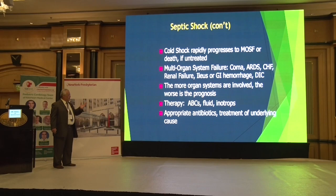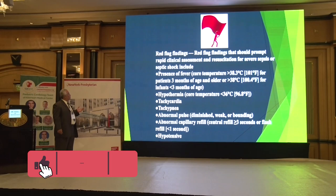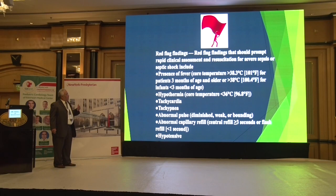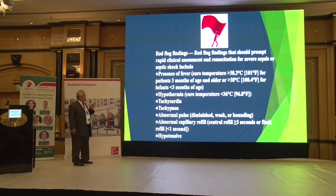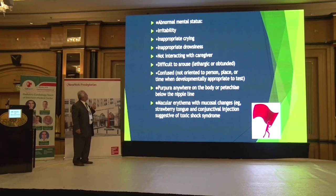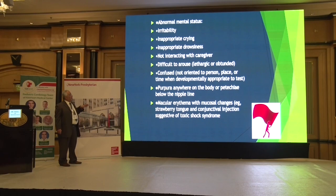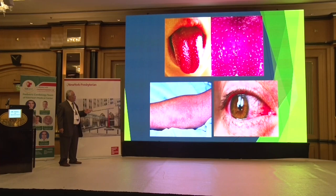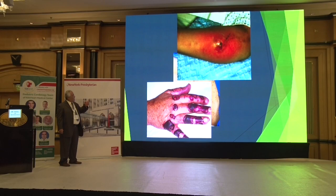Therapy: start with ABCs, give fluids, give inotropes, appropriate antibiotics, and treat the underlying cause. Red flags: fever more than 38.3°C in patients three months and older, or more than 38°C in infants less than three months, hypothermia, tachypnea, abnormal pulse, abnormal capillary refill (more than 3 or less than 1 second), hypotension, fluctuating mental status, irritability, inappropriate crying, inappropriate drowsiness, not interacting with caregivers, confusion, purpura anywhere on the body, petechiae below the nipple line, macular erythema with mucosal changes, strawberry tongue — suggesting toxic shock syndrome. Signs of infection: abscess or ecchymosis.